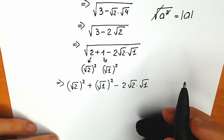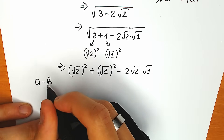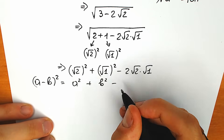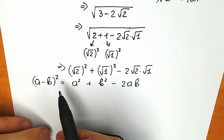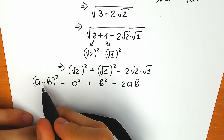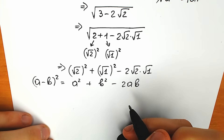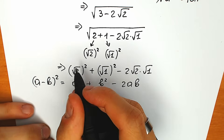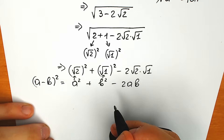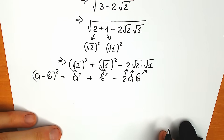Right now I hope you know the algebraic formula for (a minus b) squared: it equals a squared plus b squared minus 2ab. Looking at our expression, we can identify: square root of 2 is our a, so we have a squared; square root of 1 is our b, so we have b squared; and we have 2 times a times b. This is exactly our case, so we can apply this formula.